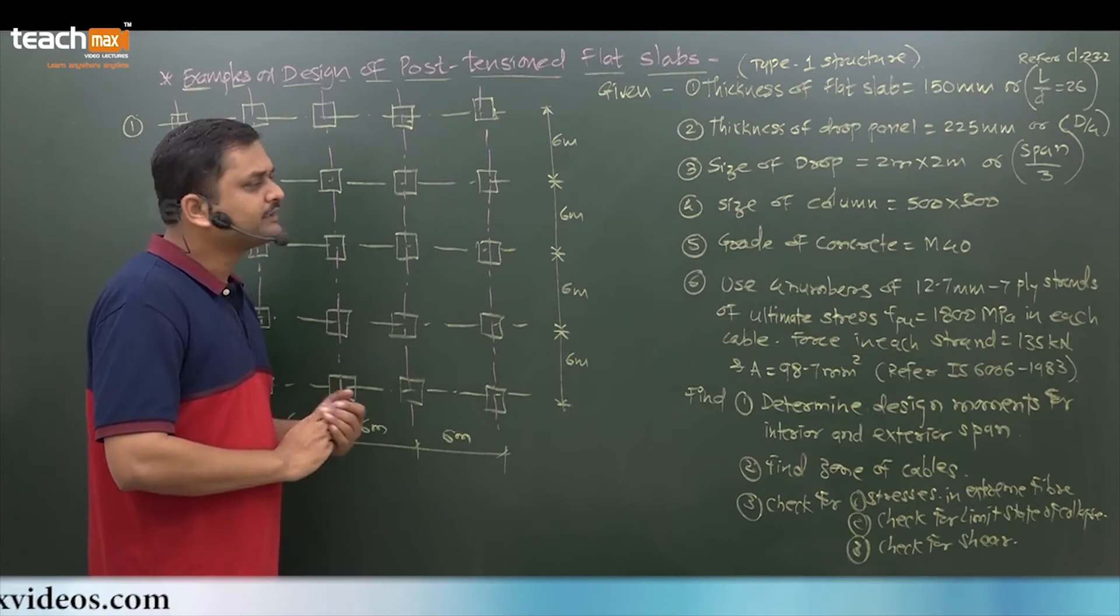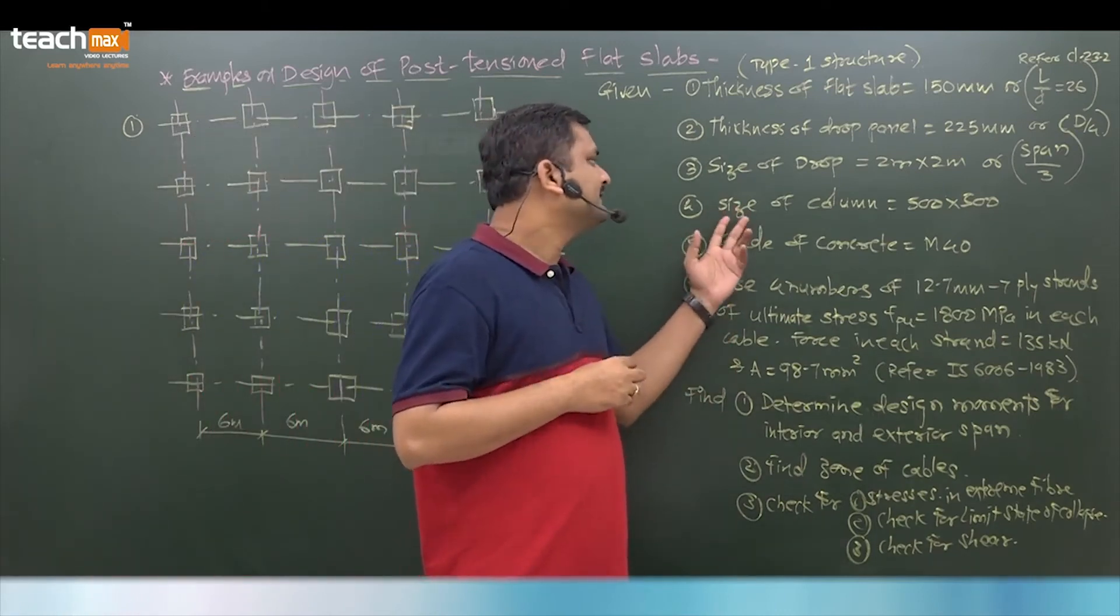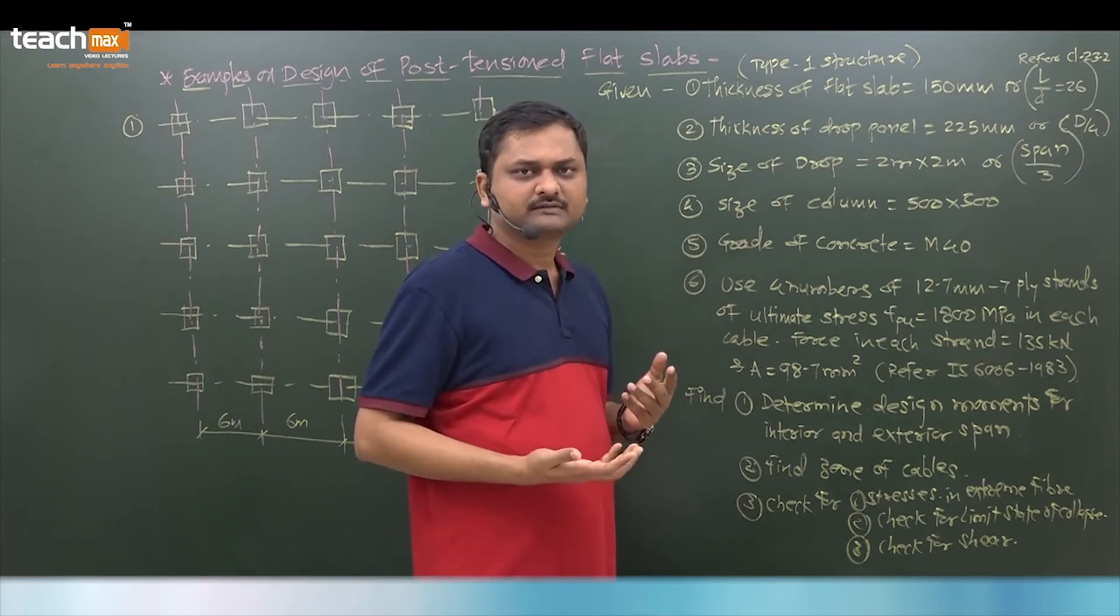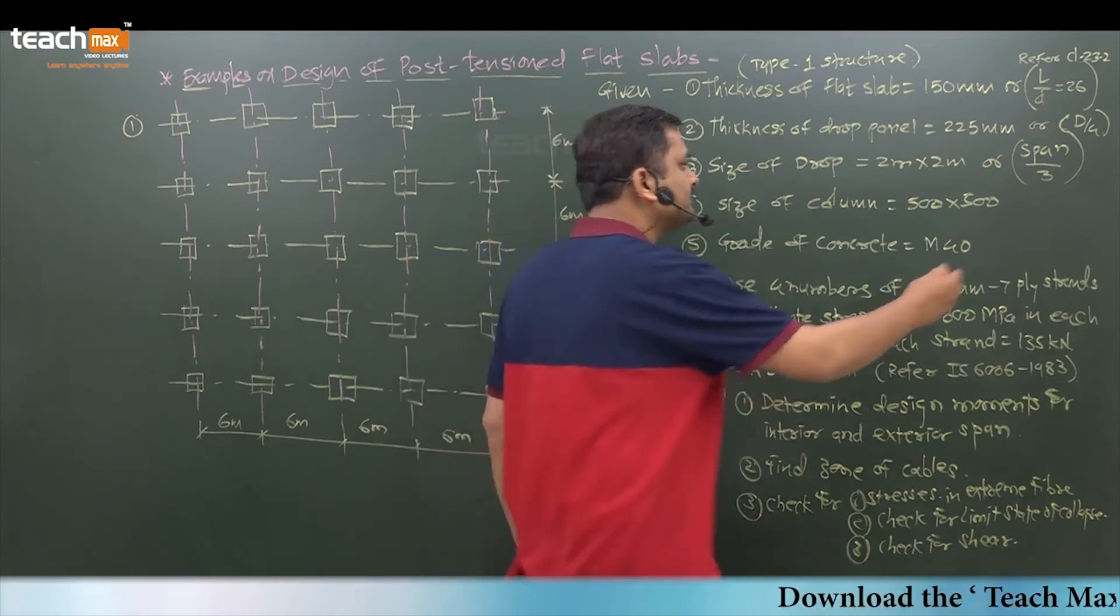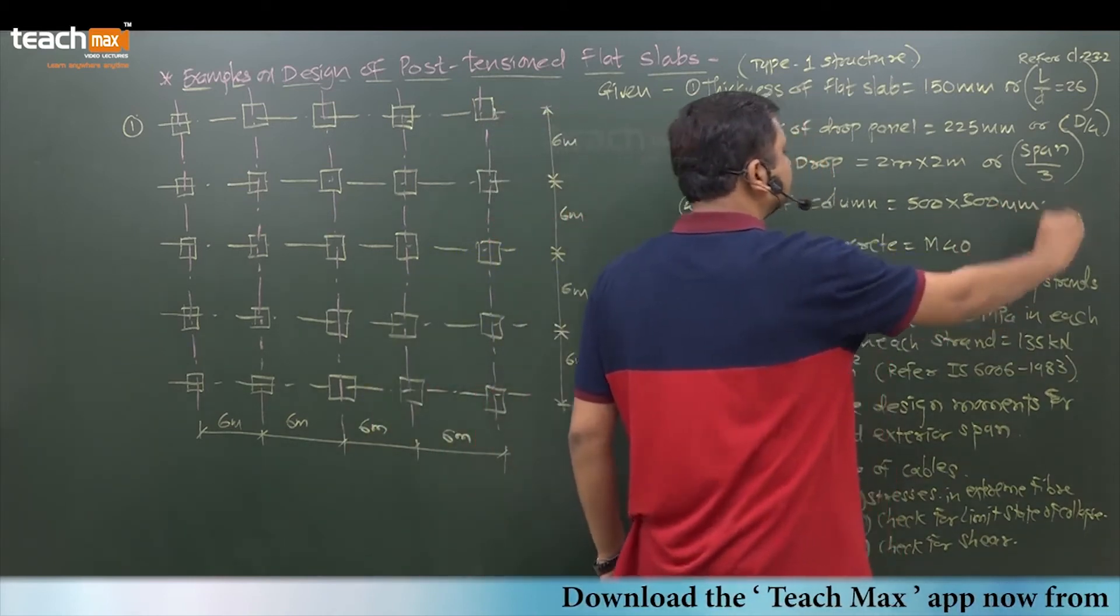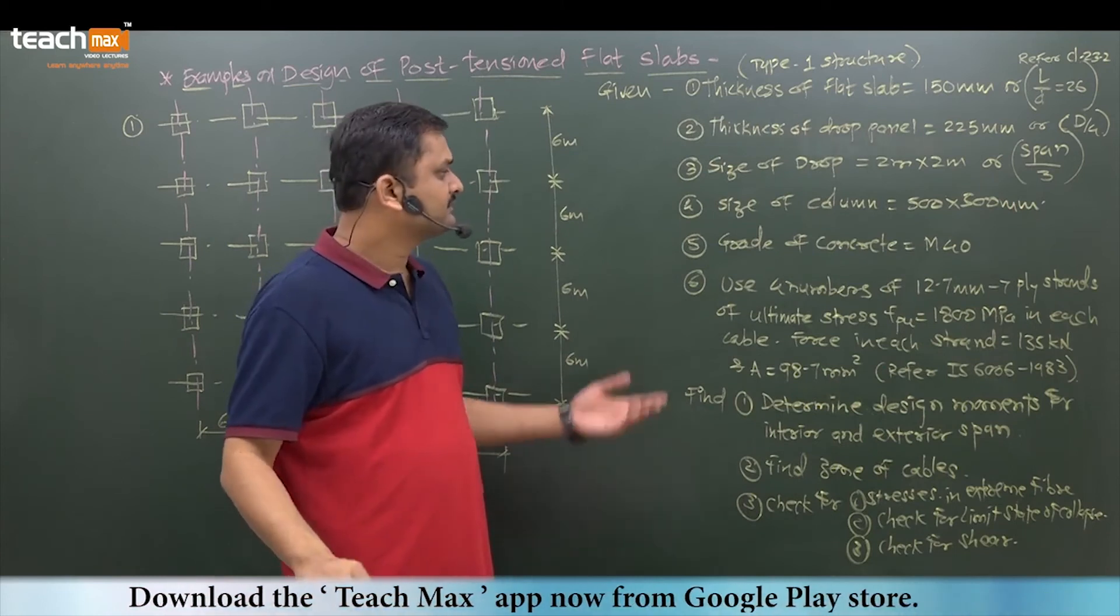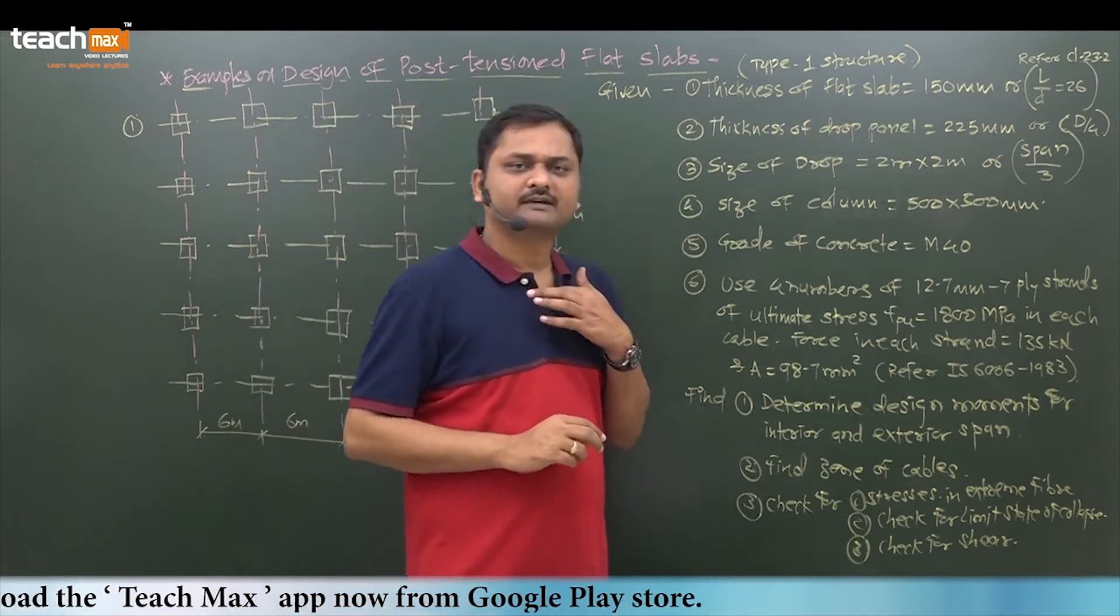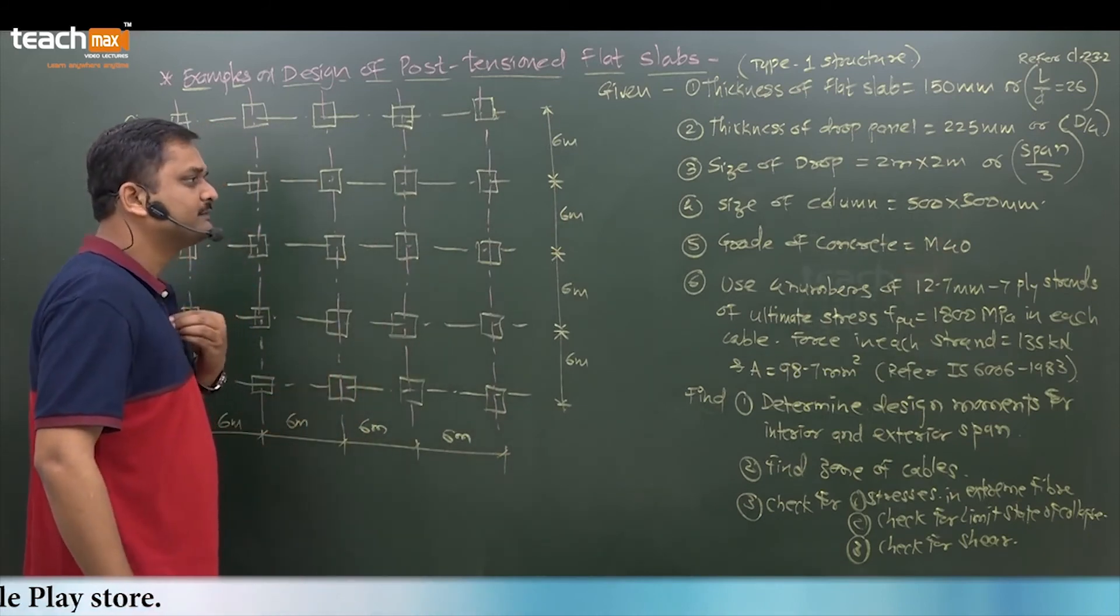Size of column is available with us. Definitely it is given to you: 500 by 500 mm. Sizes vary - size of the columns vary, but here throughout the floor system it is same: 500 by 500.